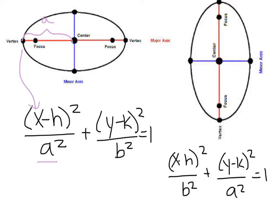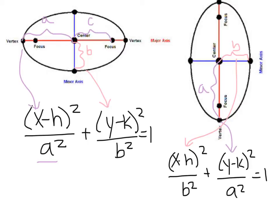In a vertical ellipse, A is still your long radius — your distance from the center to the vertex — but since it's in the Y direction, it's under the Y part. B is going to be the distance from your center to your co-vertex, and that's going to be vertical here or horizontal here. We also have C, which is your distance from the center to a focus. Your foci are always located on the major axis. The relationship between A, B, and C is always A squared minus B squared equals C squared.